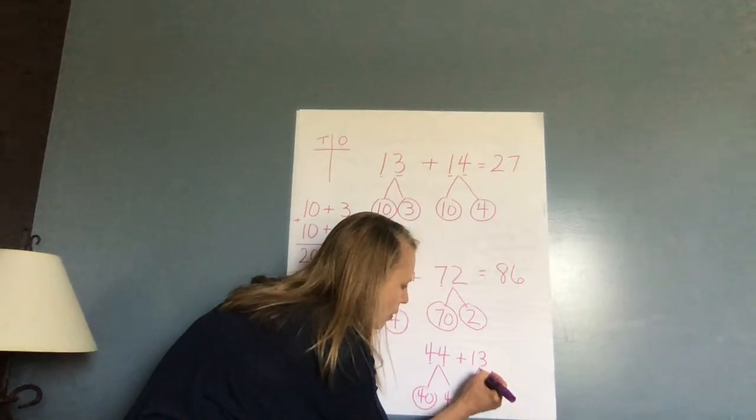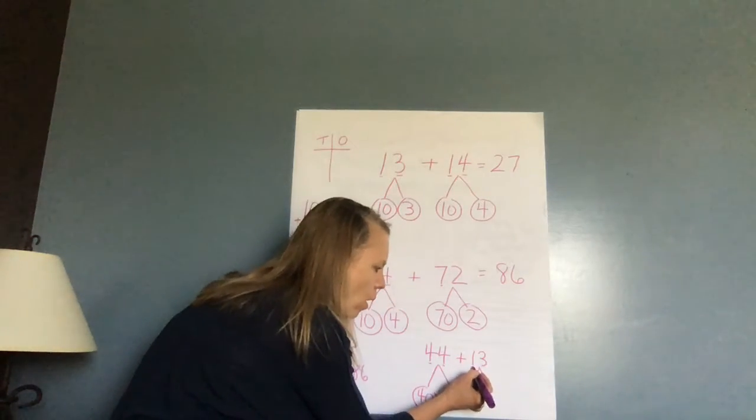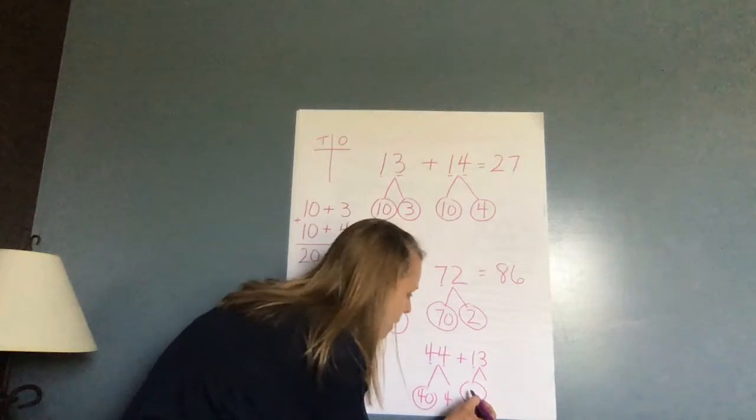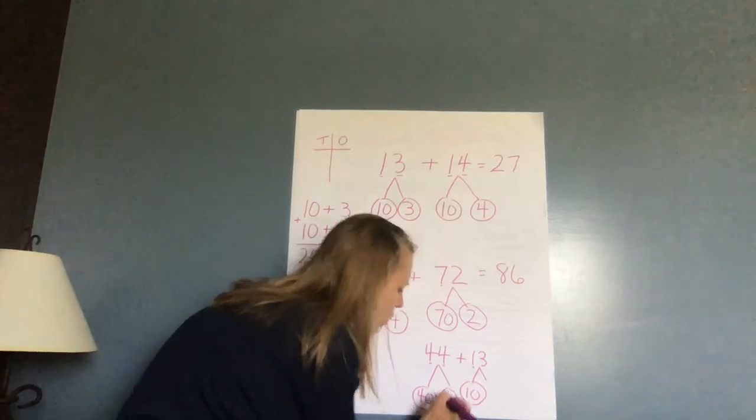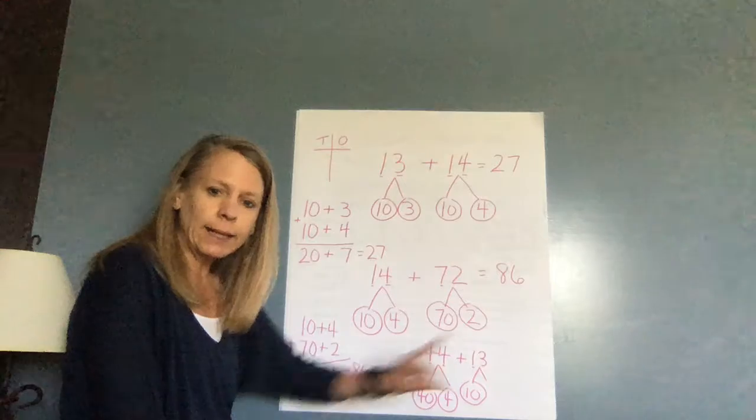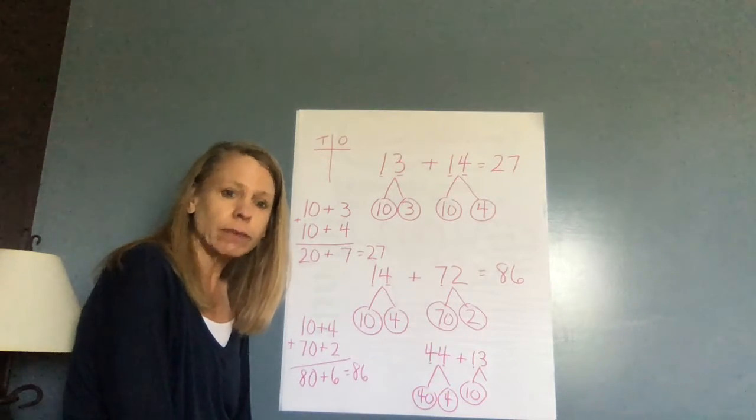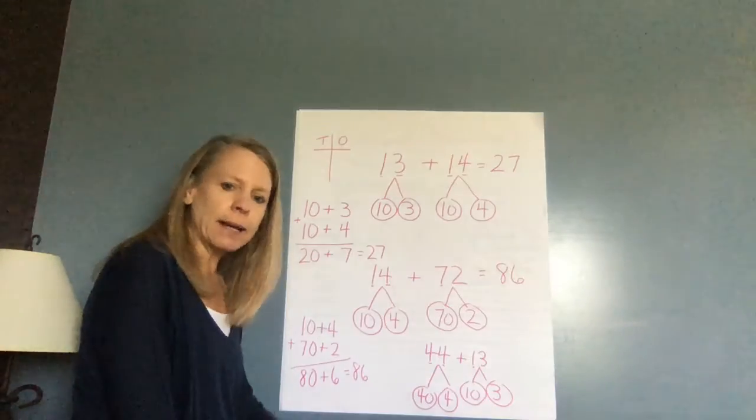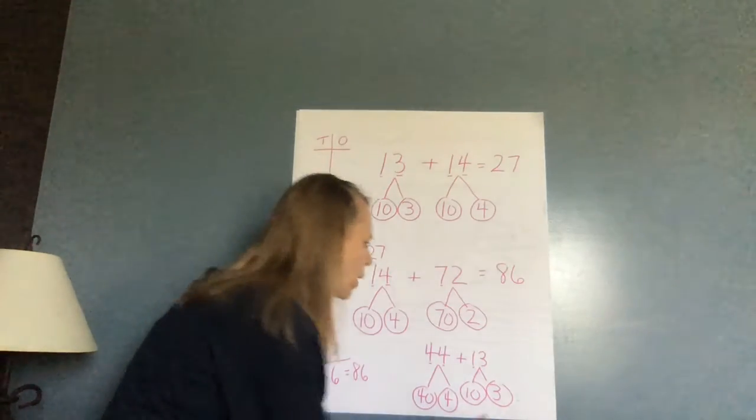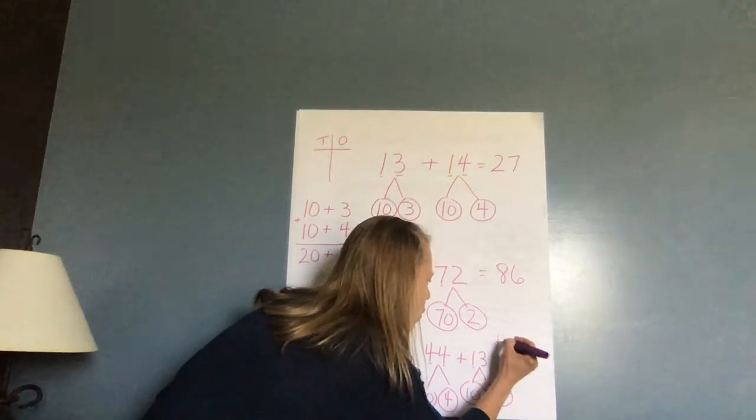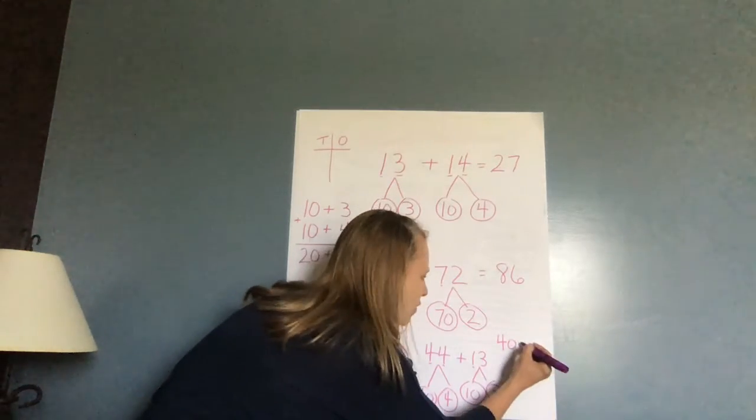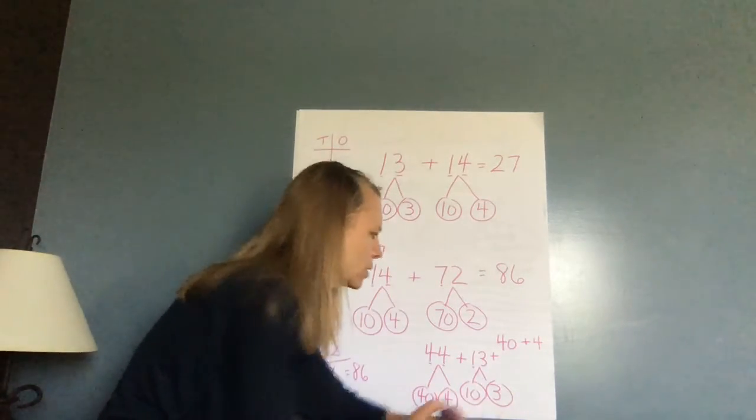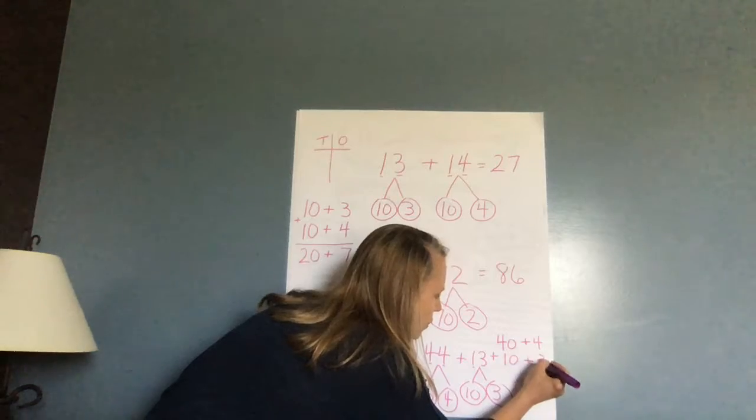Now I'm going to break apart the 13. And I have one group of 10. So how much is that? It's 10. Let me circle my four. And I have a three in the ones place. How much do I have? Three. So now I'm going to do what? I'm going to add the tens first. So I have, and I'm going to come over here, 40 plus four, plus 10 plus three.